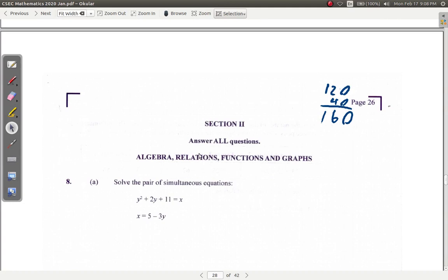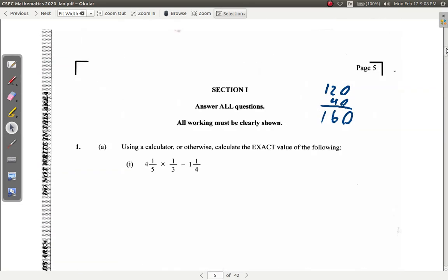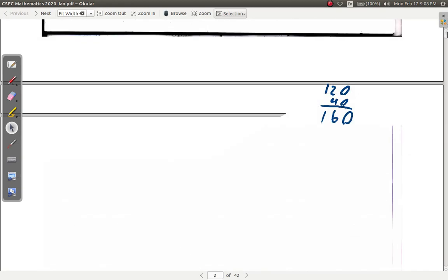Then section two is where question eight starts. So, you have eight, nine, and ten in section two. But you don't have an option. You have to answer all questions in section one and all questions in section two as well. So, you take the first ten minutes to read through these questions.